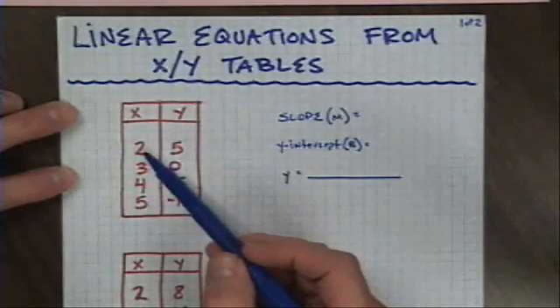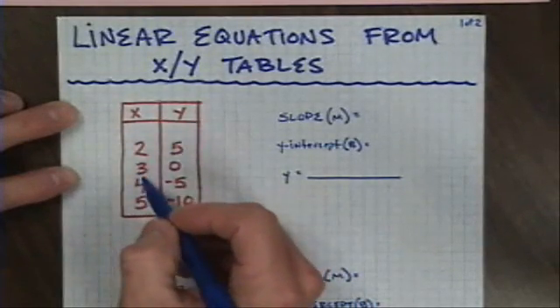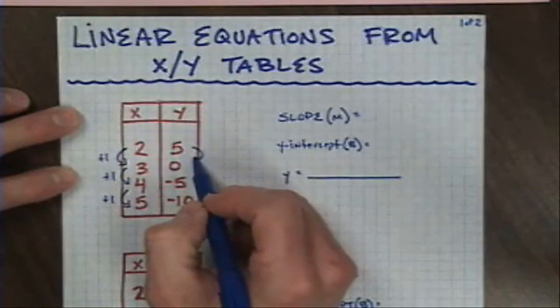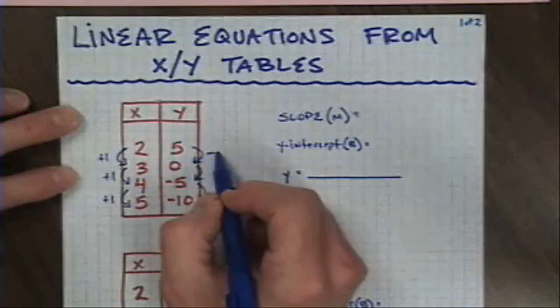The first example in red here is an x-y table where x increases by 1 every time, 2 to 3 to 4 to 5. So I'm going to go ahead and indicate that it's going up by 1 in every step. That would be the recursive formula. And I'm also interested in how y is changing every time. In this case, y happens to be changing by going down by 5 every time.